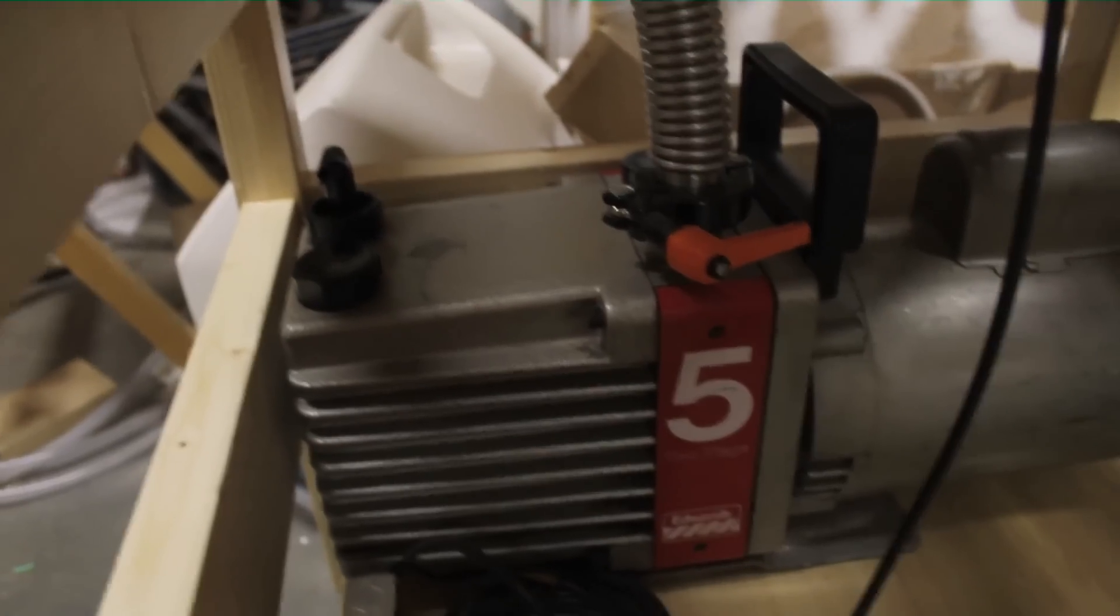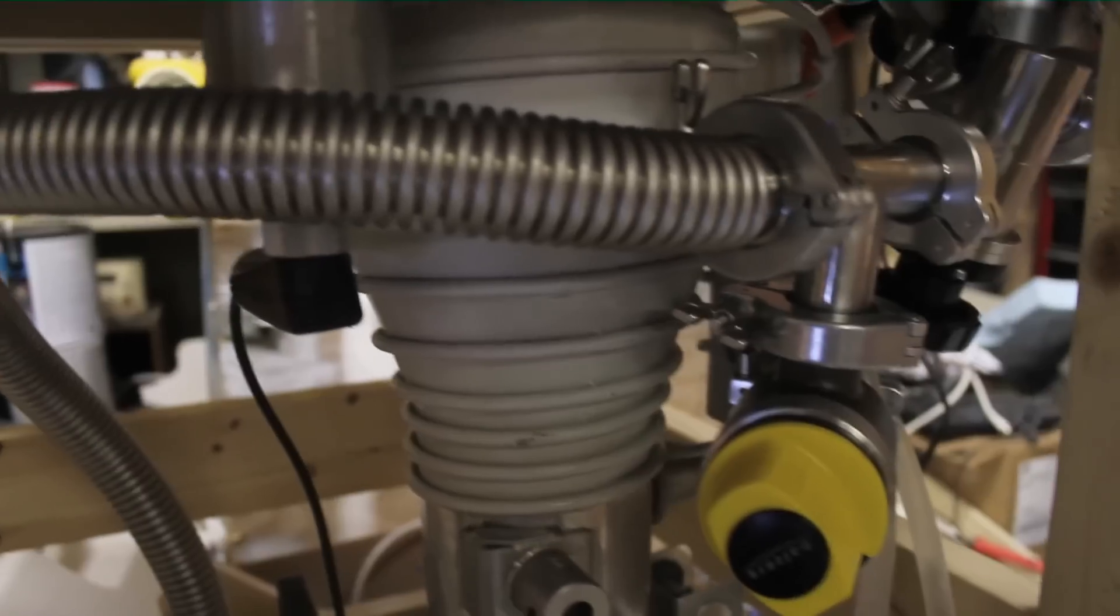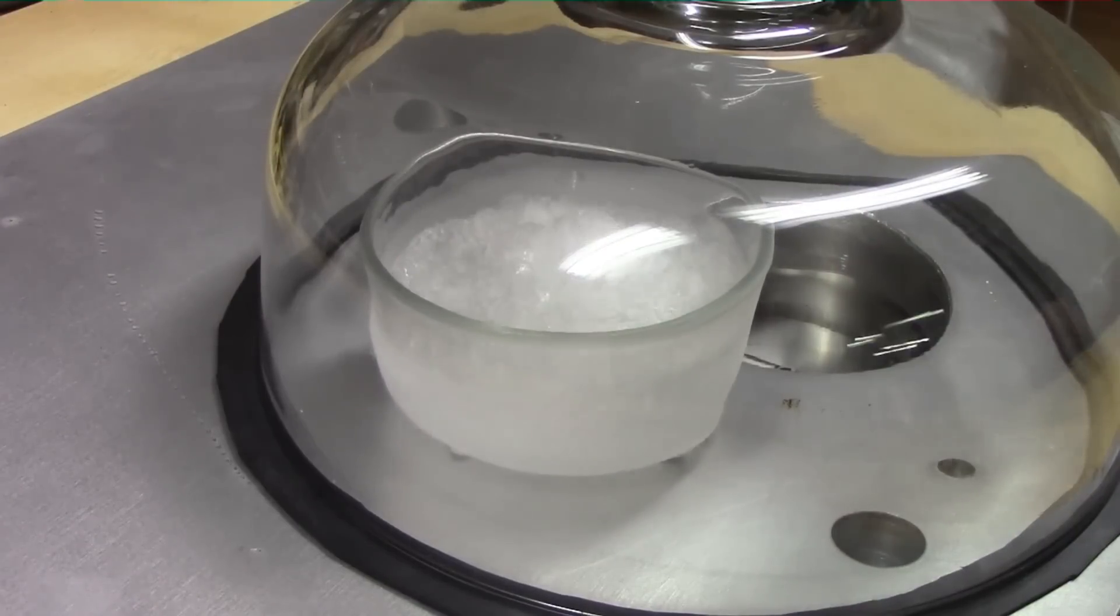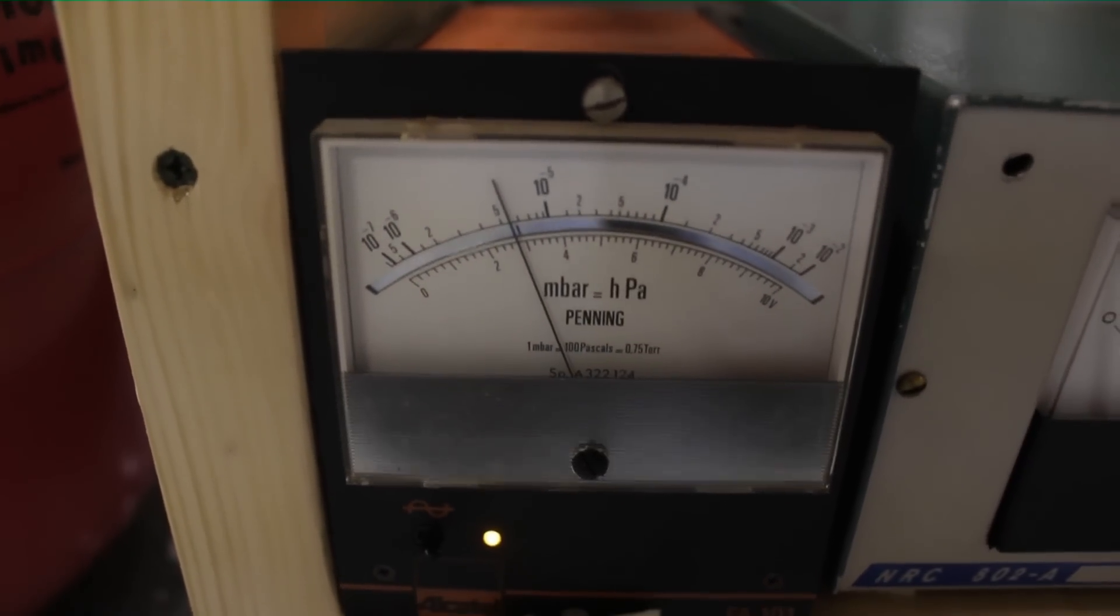The Edwards number 5 pump is fantastic. I hooked it up with a stainless hose. I did a few pump downs and even made some solid nitrogen. It got down to 6E-6 millibar with big rubber gaskets and no baking.